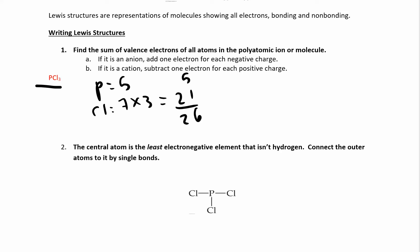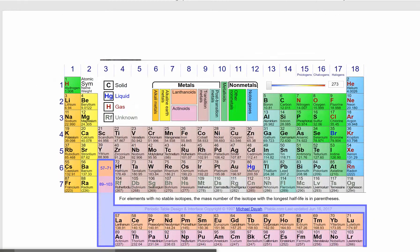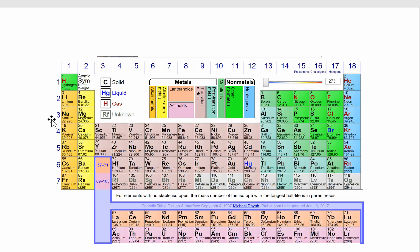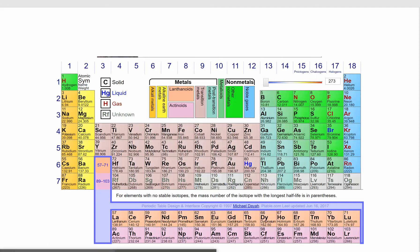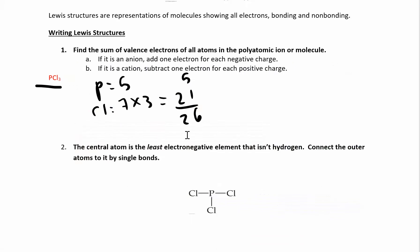You should have a periodic table in front of you at all times when you're doing these. Phosphorus is over here — it has five valence electrons. Chlorine has seven, which we already talked about. So that's our total number of valence electrons: 26.